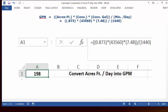Equal sign, open parentheses, open parentheses, 0.873, close parentheses, multiplication key, open parentheses, 43560, close parentheses, multiplication key, open parentheses, 7.48, close parentheses, close parentheses, division key, open parentheses, 1440, close parentheses, and then press enter.